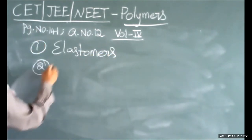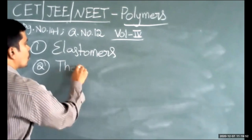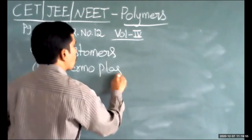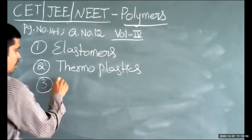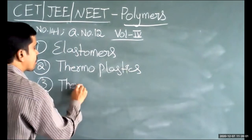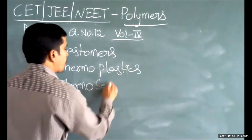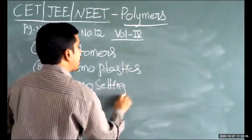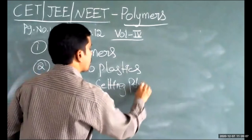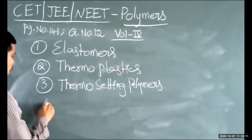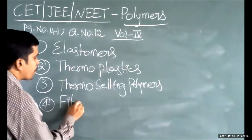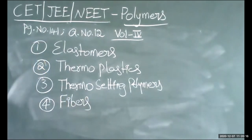The second type is thermoplastics. The third type is thermosetting polymers. The fourth type is fibers. This classification is found in the NCERT textbook under 'classification of polymers based on molecular forces.'